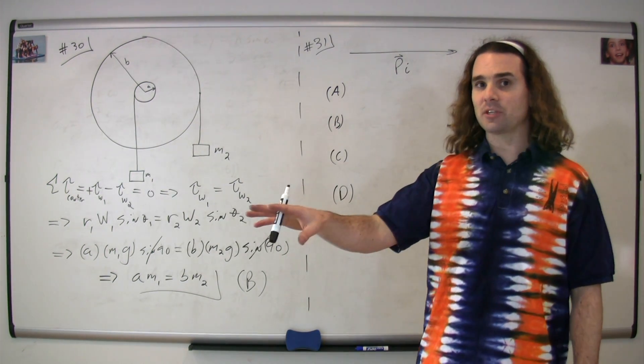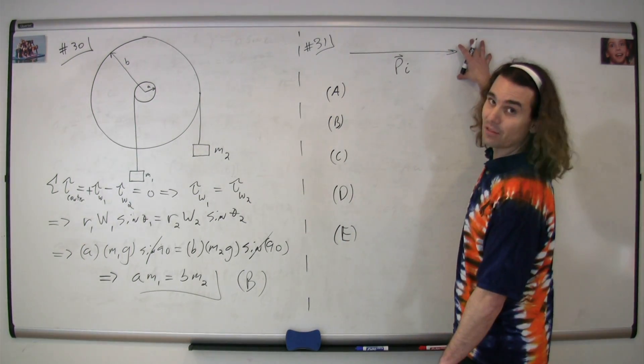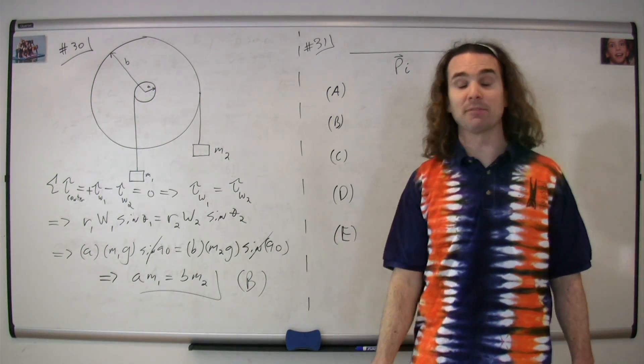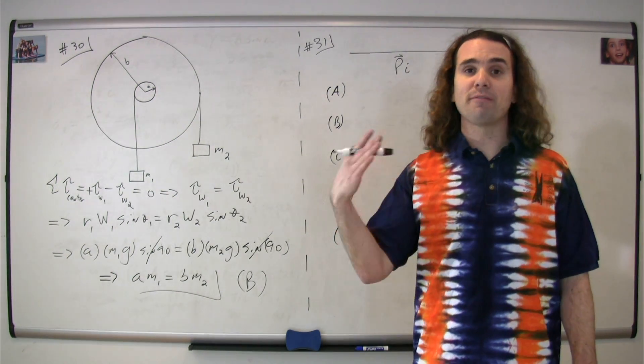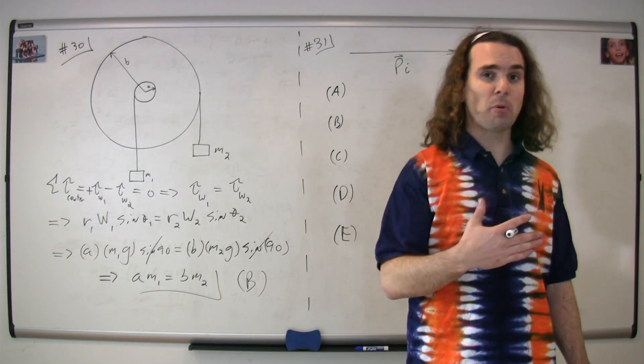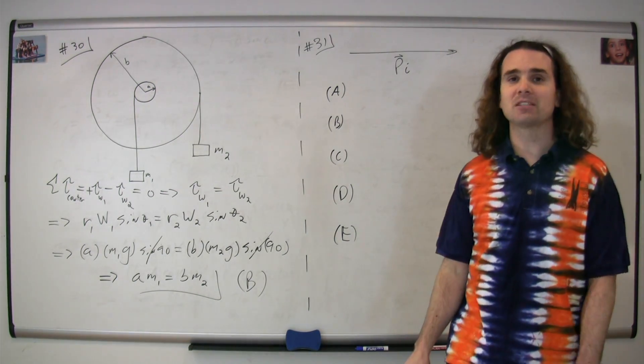Now, considering the second object is at rest, the initial momentum of the system looks just like this. That's the total initial momentum of the system. Considering momentum is conserved during a collision, the final momentum is going to be equal to the initial momentum of the system. So this also represents the final momentum of the system.